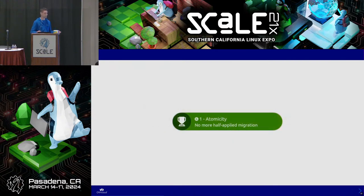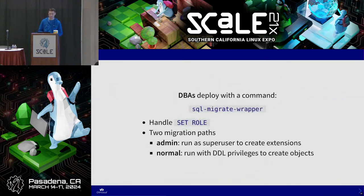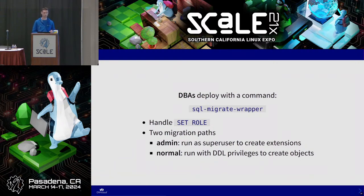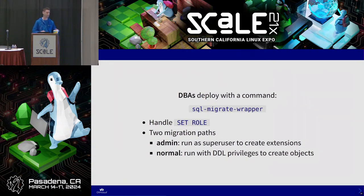Now we have atomicity. From the DBA point of view, we have SQL Migrate, but we've created a wrapper to implement some missing features that apply only for us — handling the SET ROLE statement, and a little bit of orchestration around a migration. We have two paths: the admin path to declare extensions, run by superuser, and the common one. The normal path runs to create objects using the right privilege.